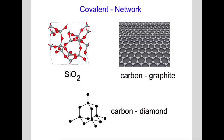Covalent bonding can also occur in a network fashion. These are structures with large 3D lattices of covalently bonded atoms. The most common are silica SiO2, carbon in the form of graphite, and carbon in the form of diamond. The formula for a covalent network, much like an ionic compound, is the simplest ratio of the elements present — so for both graphite and diamond that will just be C. For SiO2, you can see in the picture that for every gray silicon present there are two red oxygens.